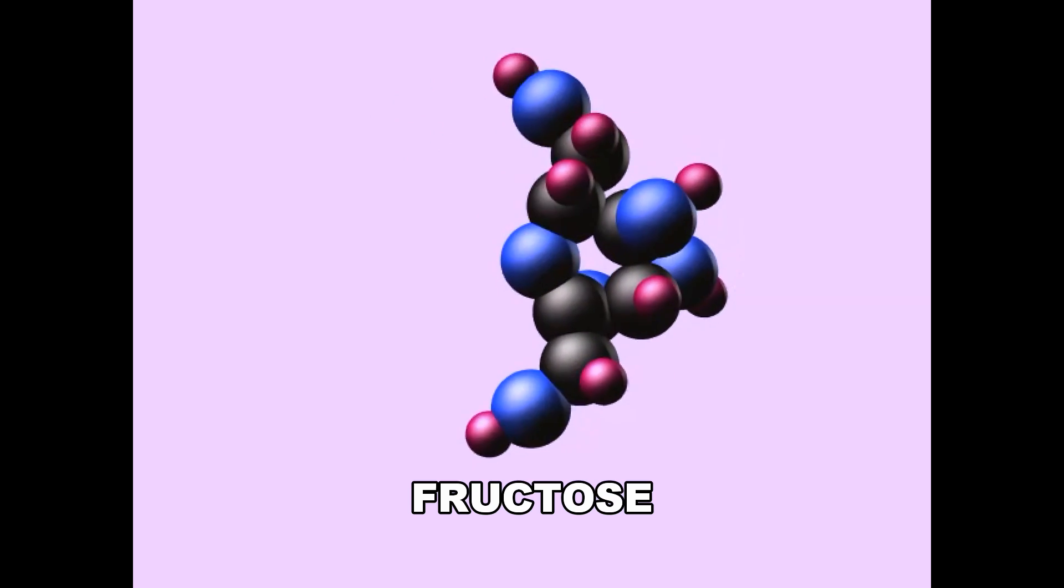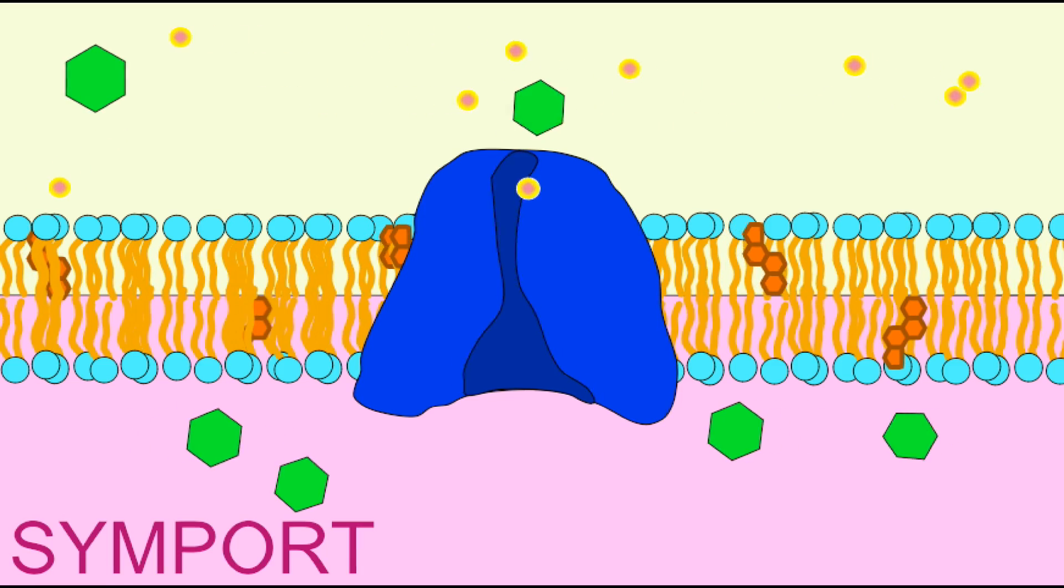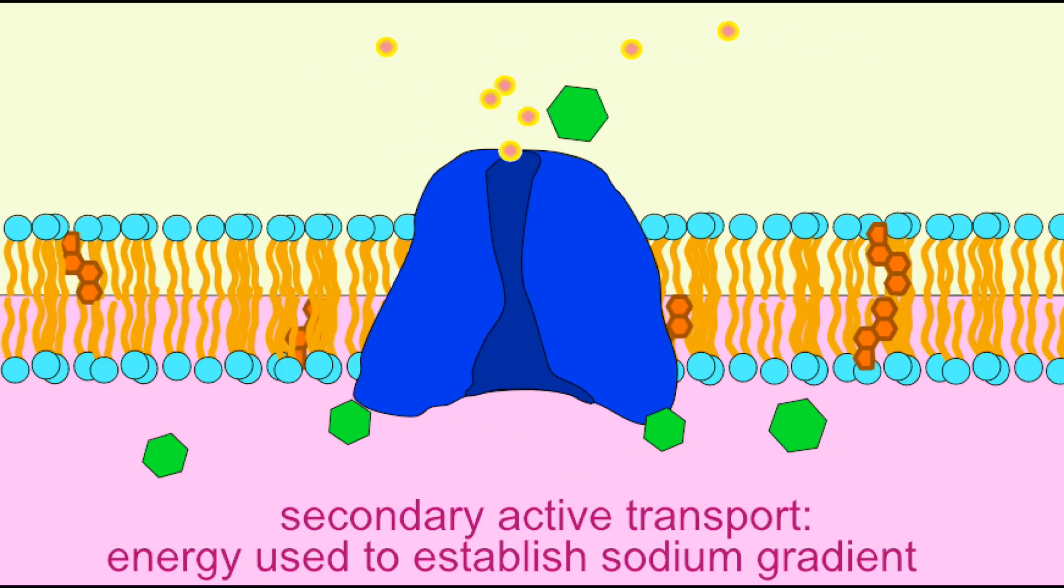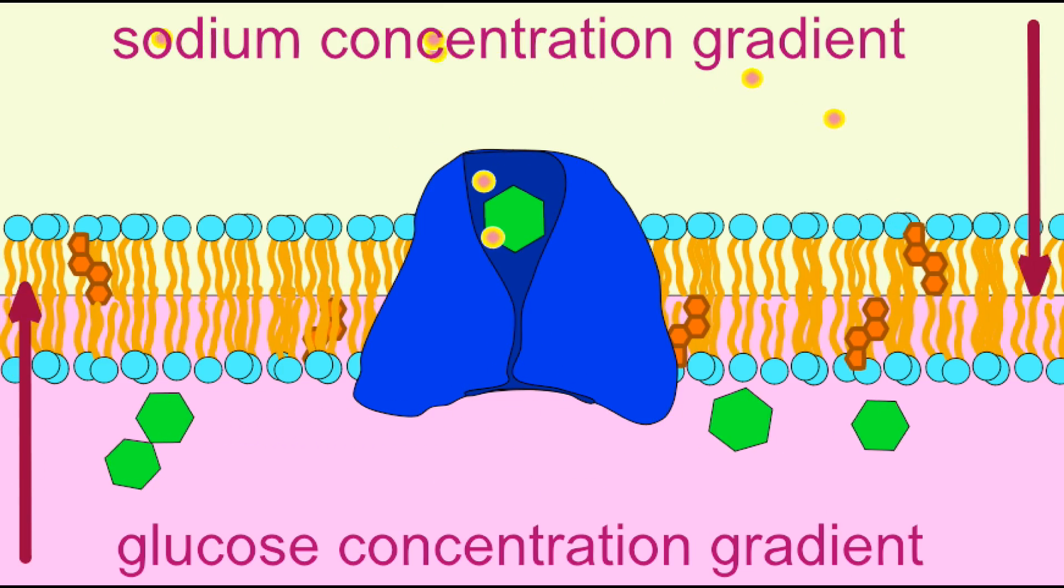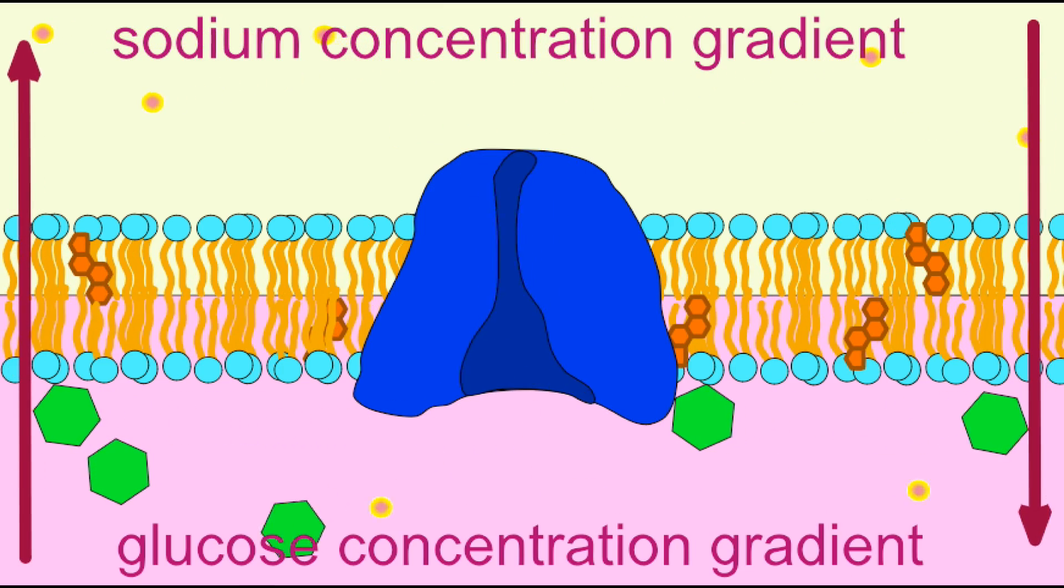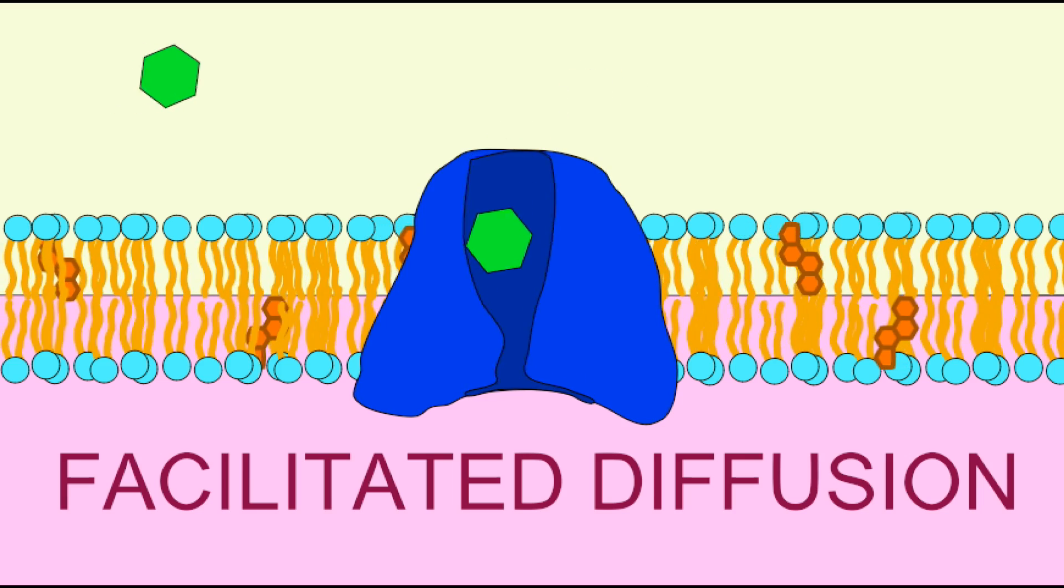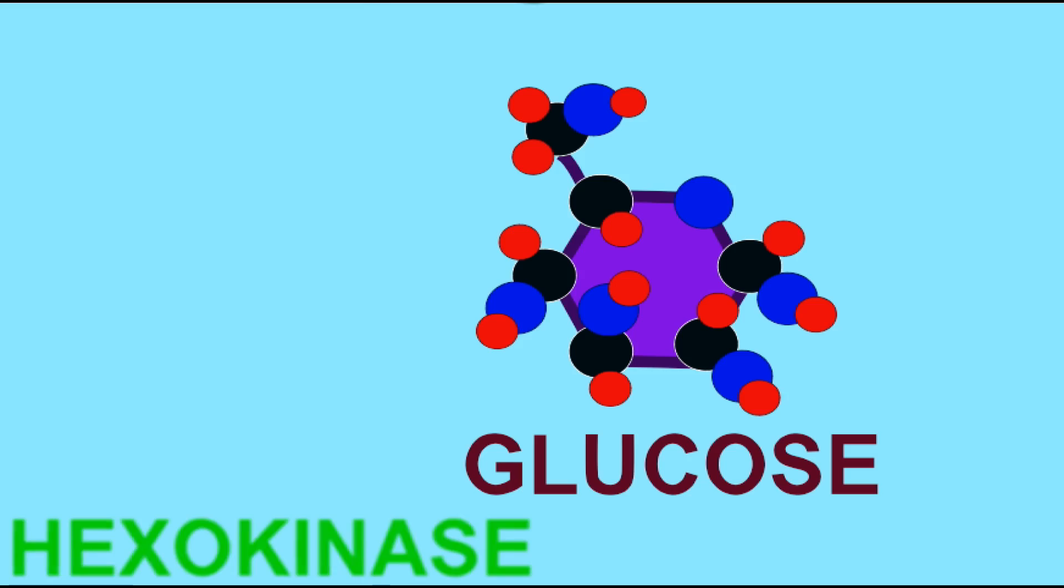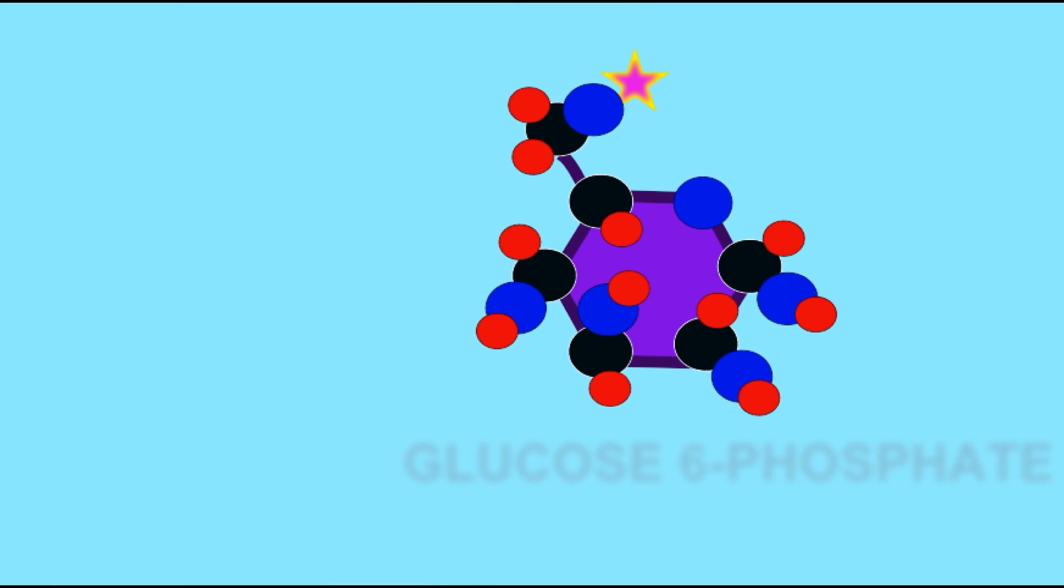These are absorbed in the small intestine, primarily through a secondary active transport mechanism with sodium, although fructose can be absorbed through facilitated diffusion as well. These travel through the bloodstream and can be broken down through cellular respiration.